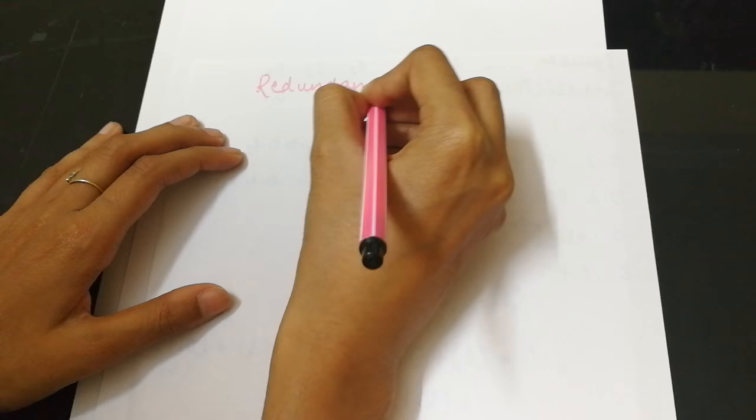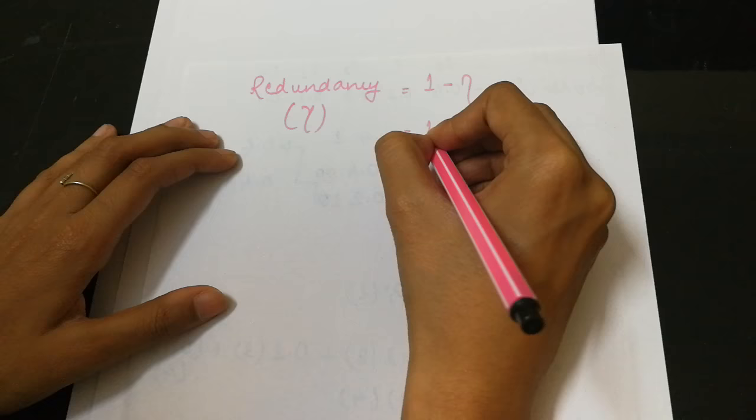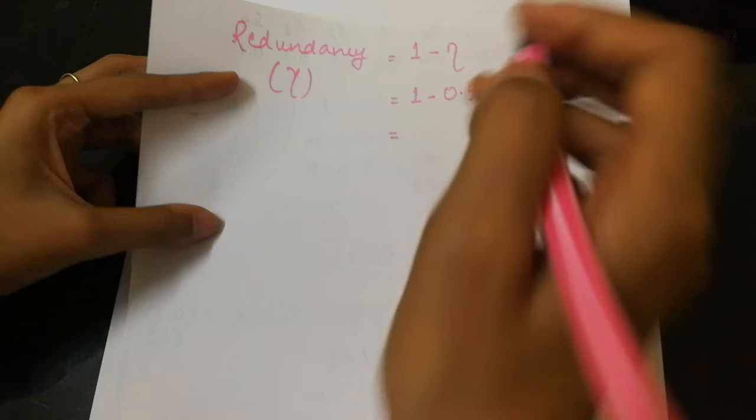Now the last is redundancy, which is denoted by gamma and is given as 1 minus eta. Eta we have calculated over here, which is 0.04.